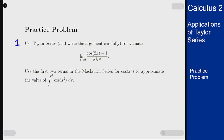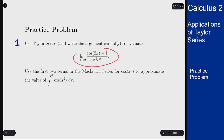We have the limit of (cos(2x) - 1) / (x² eˣ). If we plug in 0 we get 0/0, so L'Hôpital's rule would apply and we'd have to apply it twice to get the answer. Instead, we're going to use the Taylor series approach to solve it.